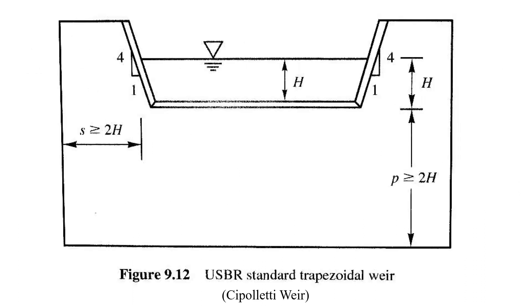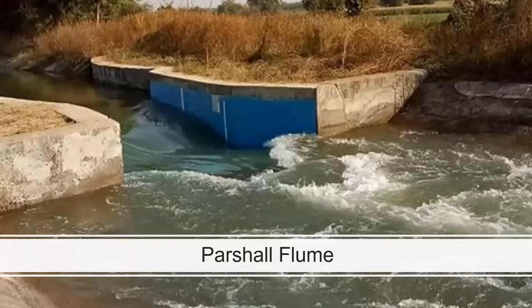We've also got trapezoidal weirs — the Cipolletti weir — which has its own equation. And then we have flumes. We're not going to cover flumes in depth, but they're actually very common, probably the most common flow measurement device in Colorado.